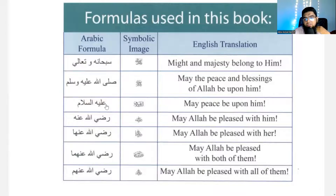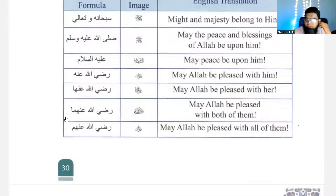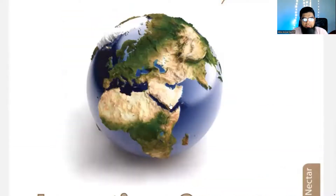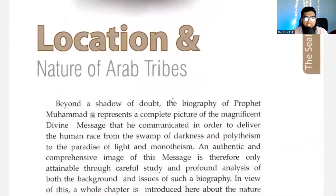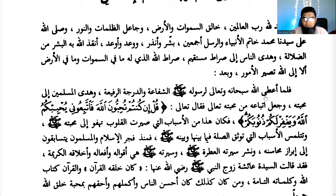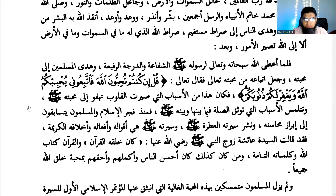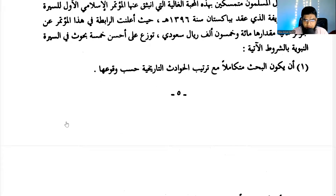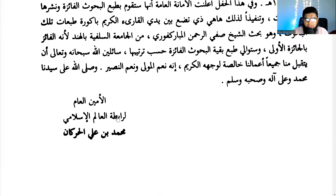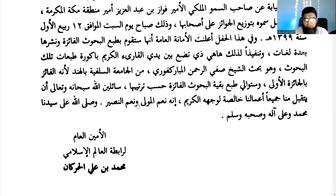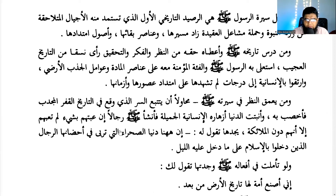Subhanahu wa Ta'ala — might and majesty belong to Him. Sallallahu alayhi wa sallam — may the peace and blessings of Allah be upon him. Radiyallahu 'anhu — may Allah be pleased with him. Radiyallahu 'anha — may Allah be pleased with her. Radiyallahu 'anhum — may Allah be pleased with all of them. So let's begin with the text.